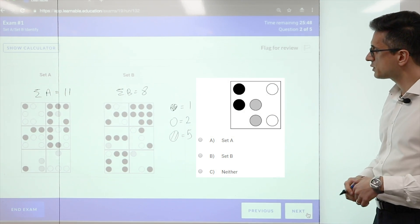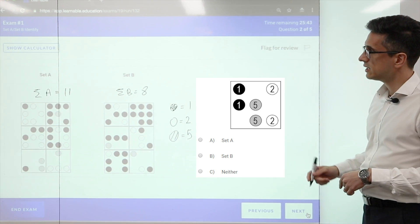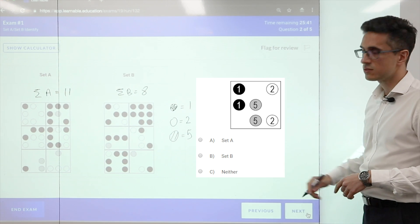For the second question, we can add up all the shapes, the total is 16. 16 is neither 11 nor 8, so it belongs to neither set.